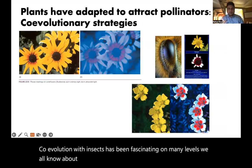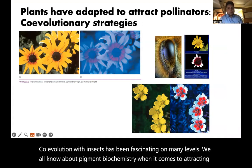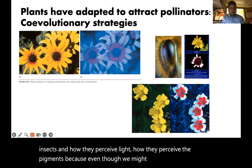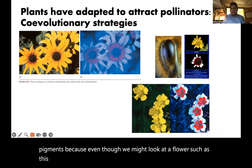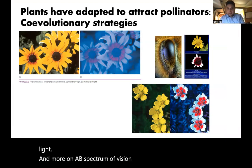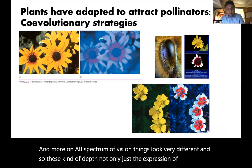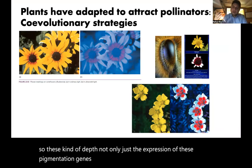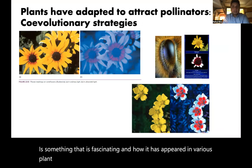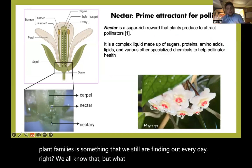We all know about pigment biochemistry when it comes to attracting insects and how they perceive light and the pigments. Even though we might look at a Rudbeckia flower as yellow and black, under ultraviolet light and on a bee spectrum of vision, things look very different. Not only the expression of these pigmental genes, but also their tissue-specific gene expression and how it has appeared in various plant families is fascinating. But what I focus on is nectar.